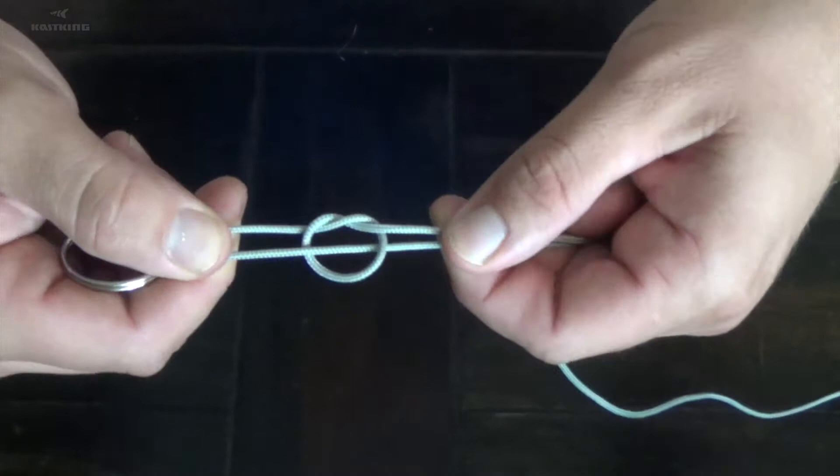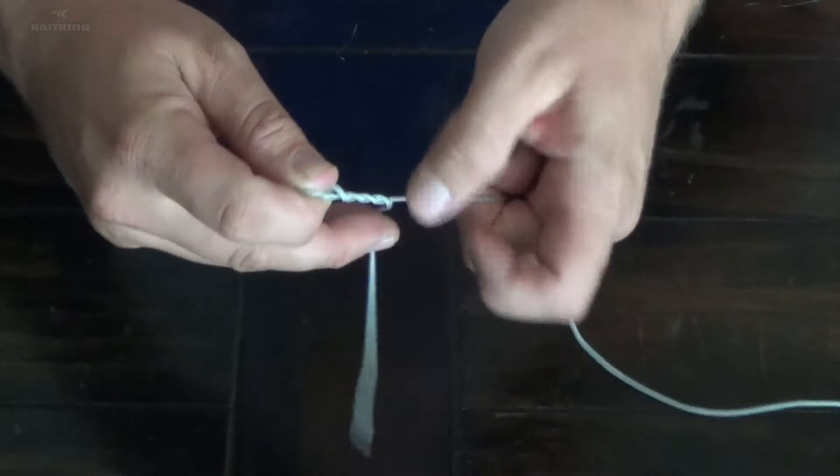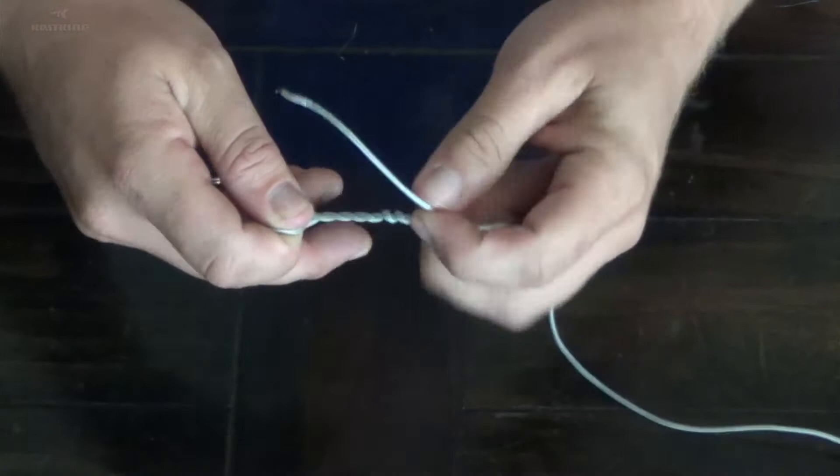Then you're gonna take your tag end and you're gonna wrap it around the main line five or six times. So one, two, three, four, five.